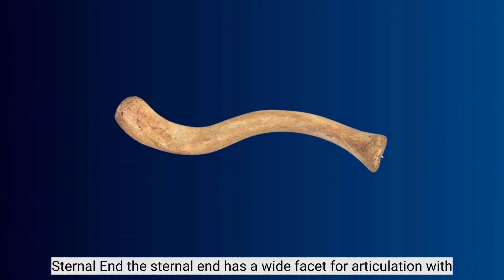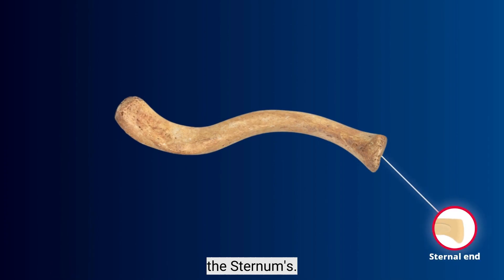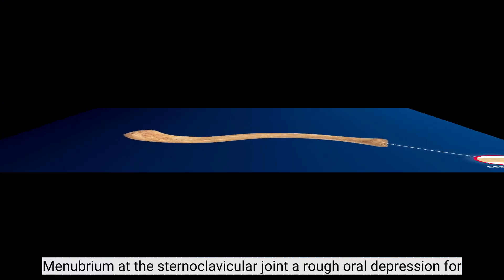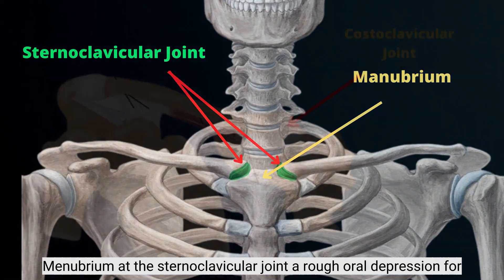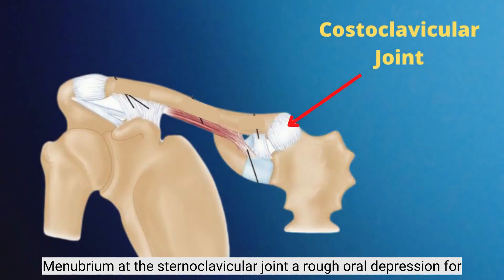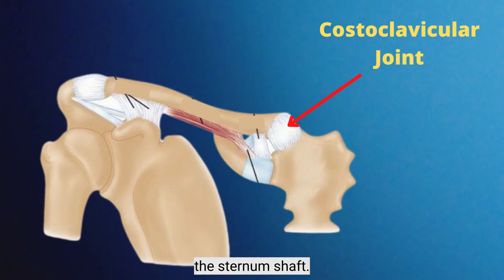Sternal end. The sternal end has a wide facet for articulation with the sternum's manubrium at the sternoclavicular joint. A rough depression for the costoclavicular ligament can be found on the inferior surface of the sternal end.